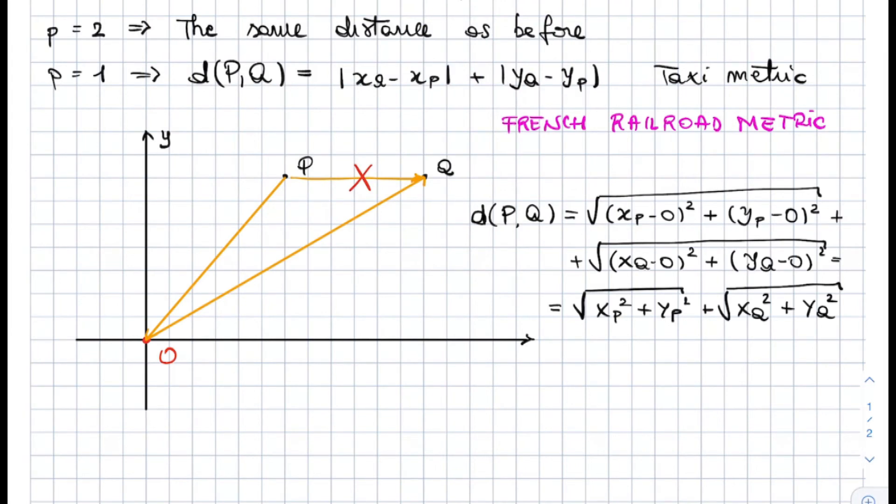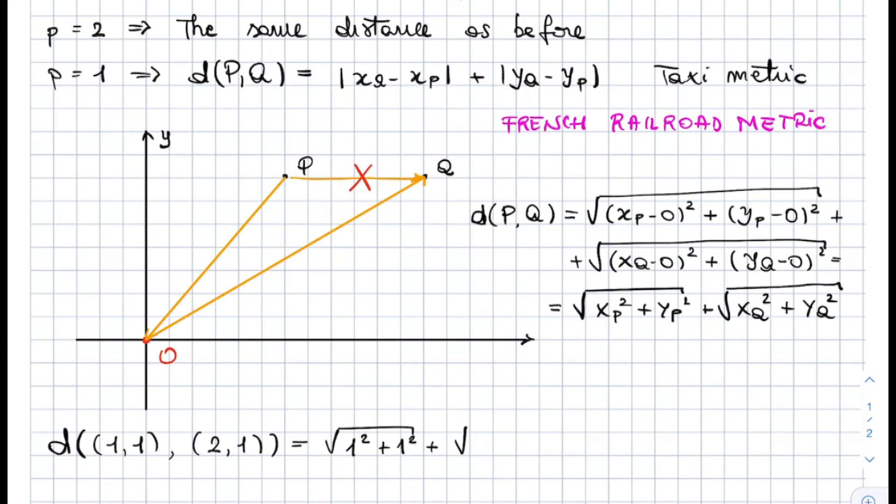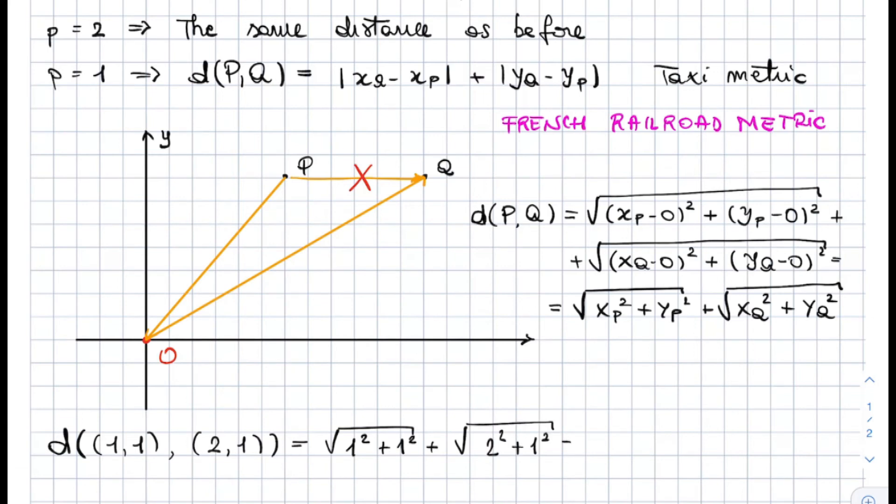Now, what I want to do now is to try and compute the distance between two points in this metric. Why do I want to do this? Because it will show that it measures distances in a way we are not used to think. Let's say we want to compute the distance between two points, the point (1, 1) and the point (2, 1). Using the formula we have written down, this is the square root of 1 squared plus 1 squared, plus the square root of 2 squared plus 1 squared. And this is the square root of 2 plus the square root of 5.